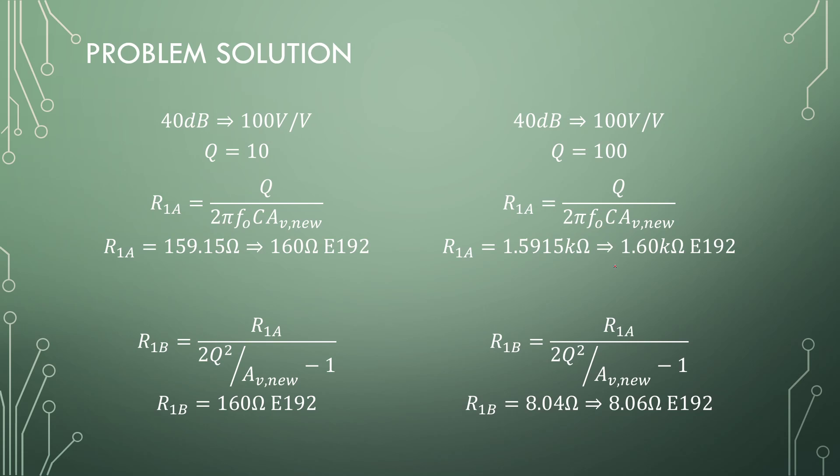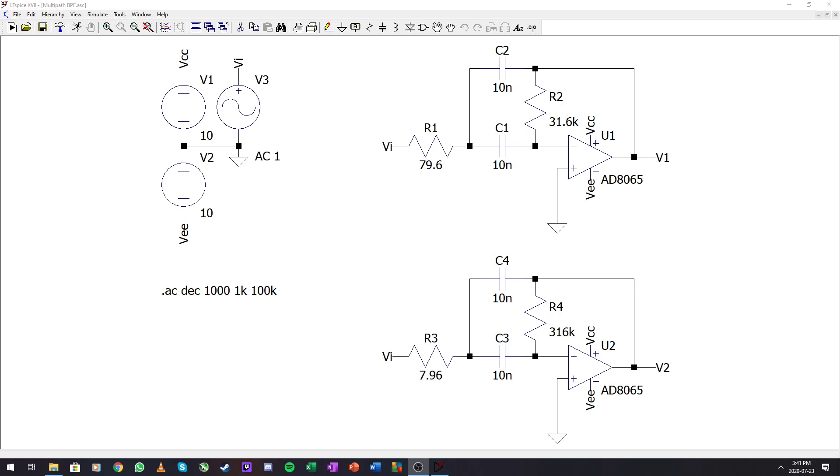The second one: if we plug in the values, we get 1.6 kΩ and 8.06 ohms, which is a very low value. Since the Q factor is so high, the gain becomes extremely high. Most of the input voltage will sit over 1.6 kΩ and the remainder over R₁B. The input is reduced quite a lot so we can bring down the gain of the entire system to 100 V/V. Let's jump to the simulator and show you the filters and comparison with the previous bandpass filter.